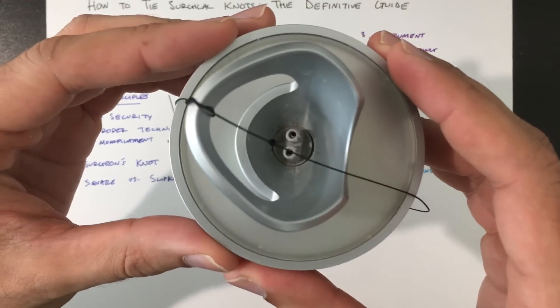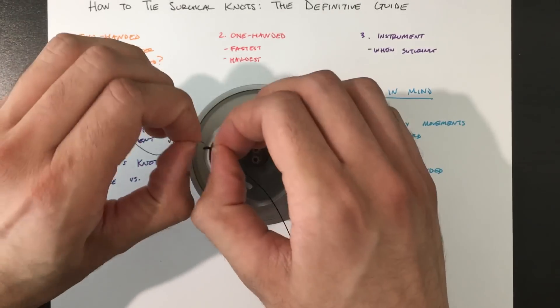As you can see, that's a surgeon's knot, that's two loops, so let me show you that one more time.